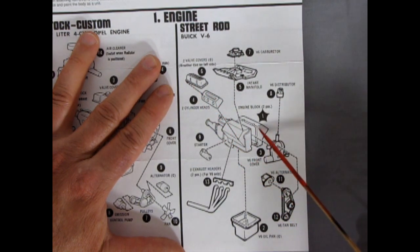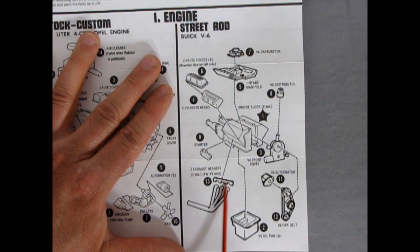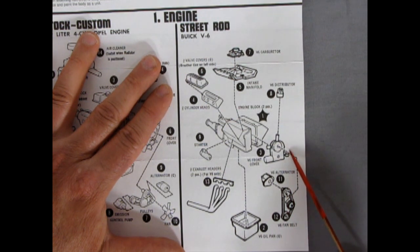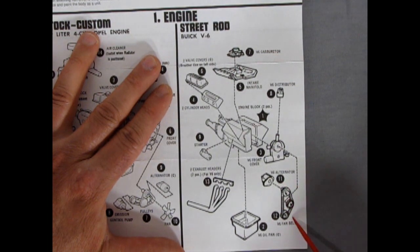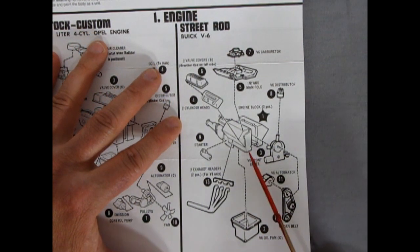Cylinder head. The two engine blocks with the transmission molded to the back. Then we have the starter. Exhaust headers with the little plate you have to glue on. A V6 distributor. The front cover. The alternator. The fan belts. And this little box style oil pan which goes up underneath.